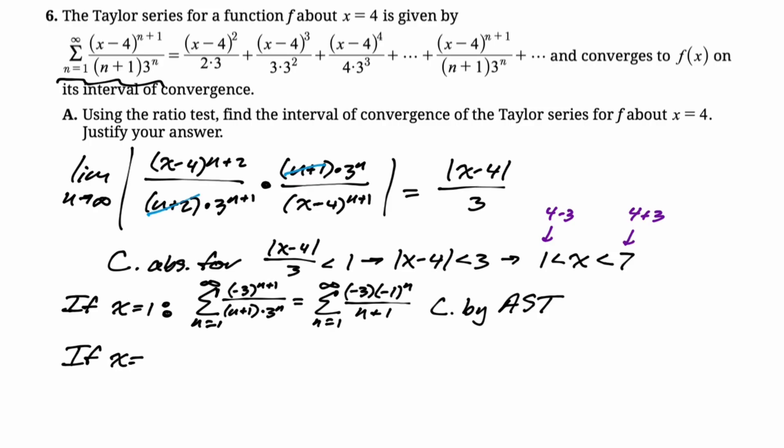If x is 7, go back to that summation again. 7 minus 4 is 3. So you just have 3 to the n plus 1 over n plus 1 times 3 to the n. So again, you can do the thing where it's 3 to the n times 3 to the first. The 3 to the ns cancel, and we just get 3 over n plus 1. And again, I'm just going to say this diverges. This basically is the harmonic series shifted, but I'm just going to say it diverges by limit comparison to the harmonic series.